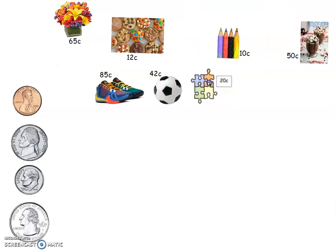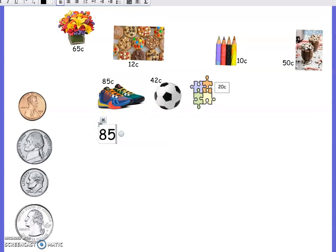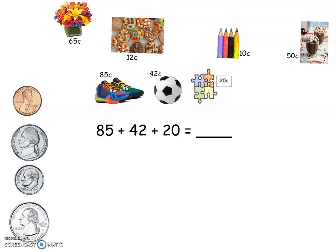I'm going to go ahead and clear this off. If you like to do it that way, that's fine, but I want you to also look at how you can write equations this way. So we'll go back to it: 85 plus 42 plus 20. We're going to go in and we're going to break this down into our groups of tens and ones.